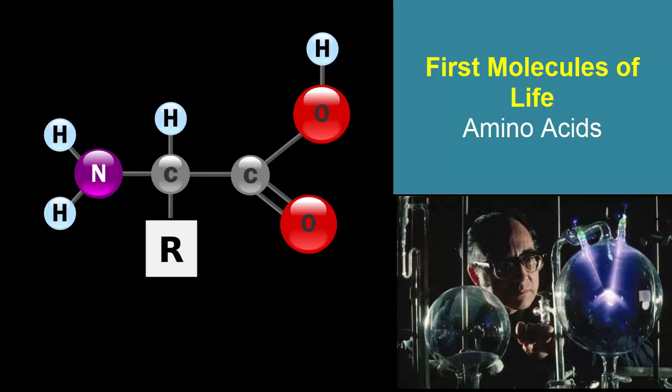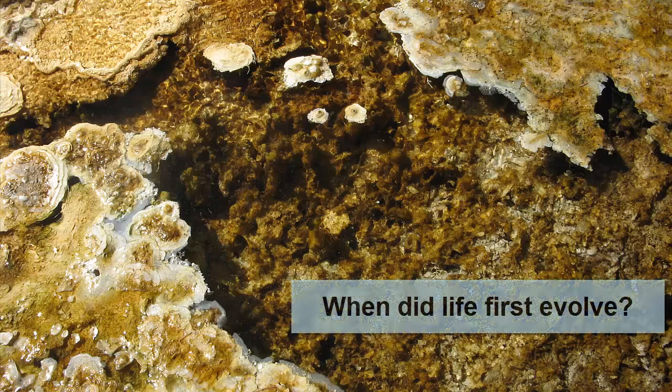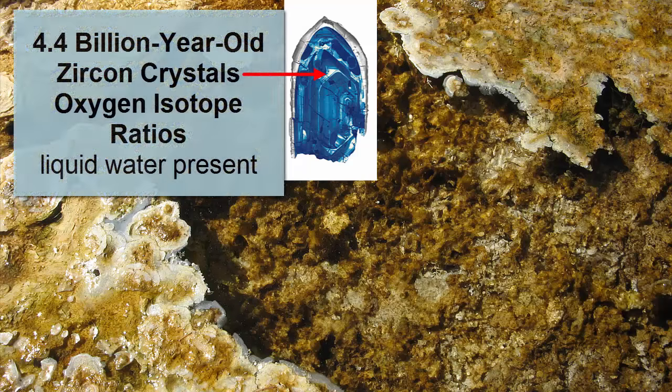Many scientists around the world are currently studying the synthesis of living cells and creating life in its simplest forms from building blocks that would have been available in early Earth. When did life first evolve on planet Earth? Oxygen isotope ratios and 4.4 billion year old zircon minerals indicate temperatures on the surface would have been cool enough for liquid water to be stable. Since life requires water, 4.4 billion years represents a possible oldest date for life on Earth.